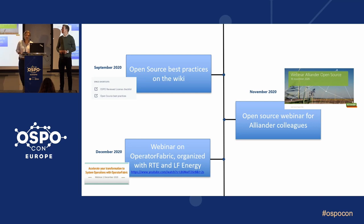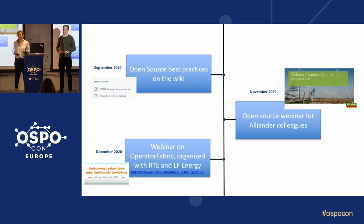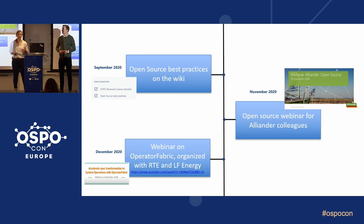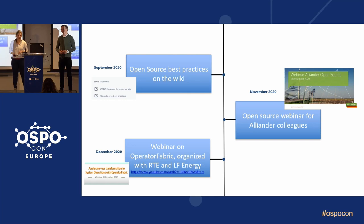The wiki started to expand during 2020. Besides the reviewed license list, we also published some best practices — we now had experience working in open source and could share that with existing and starting teams. Still, sharing this knowledge with over 5,000 employees is a bit of a challenge. Unfortunately, not all of them are checking our wiki daily, so we decided to bring the information to our colleagues more directly.